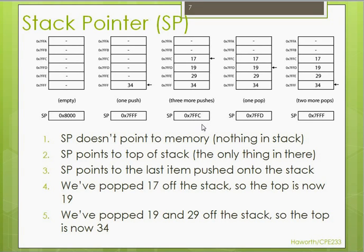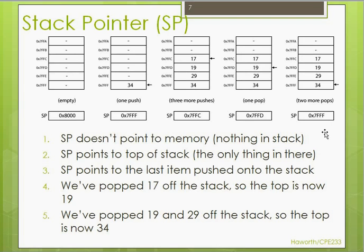This middle image shows three more pushes and the stack pointer has been decremented to 7FFC. The arrow represents the last item pushed on the stack, which is the 17. The next image shows the stack after one pop — the 17 would have been retrieved from the stack and the stack pointer incremented from 7FFC to 7FFD. The final image shows two more pops, with the stack pointer incremented by two more and left at 7FFF, which held the 34 that was pushed originally.